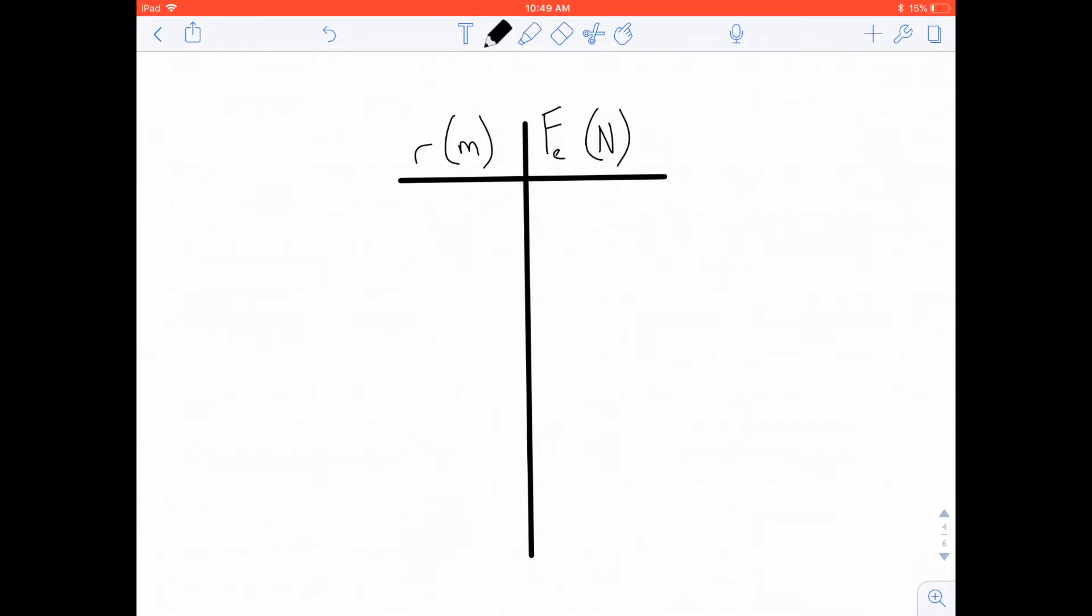Let's make a data chart, and let's just pick numbers. I like picking numbers as a strategy. Let's say that the distance between the two charges is one meter, and let's say we measure a force of, let's say, 20 newtons. Let me pick a different one, actually.